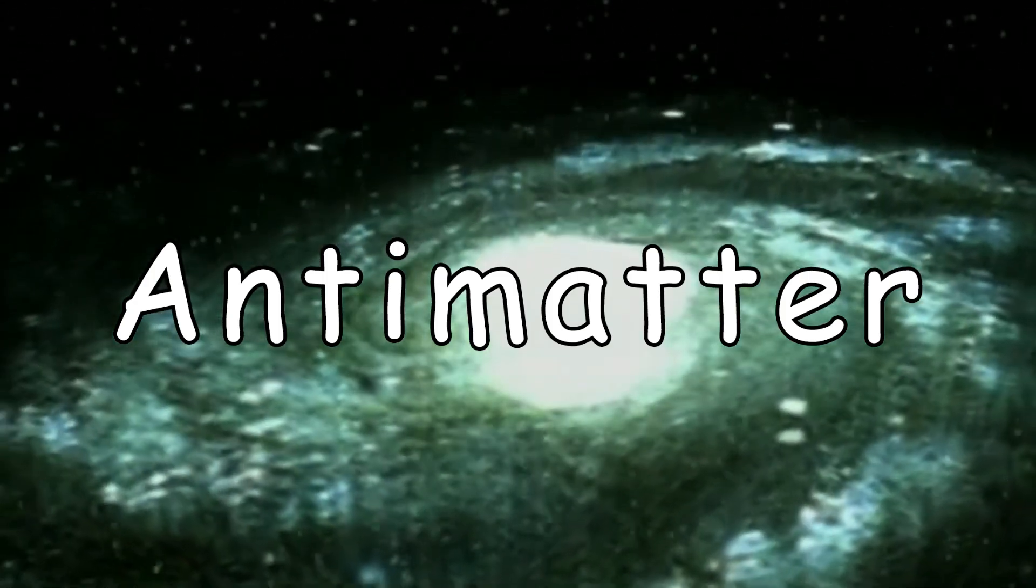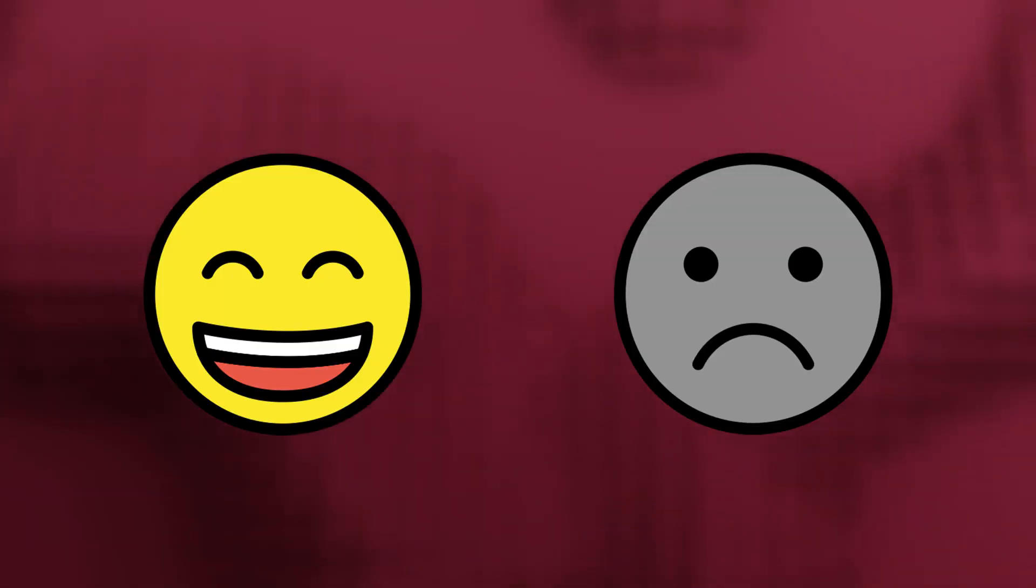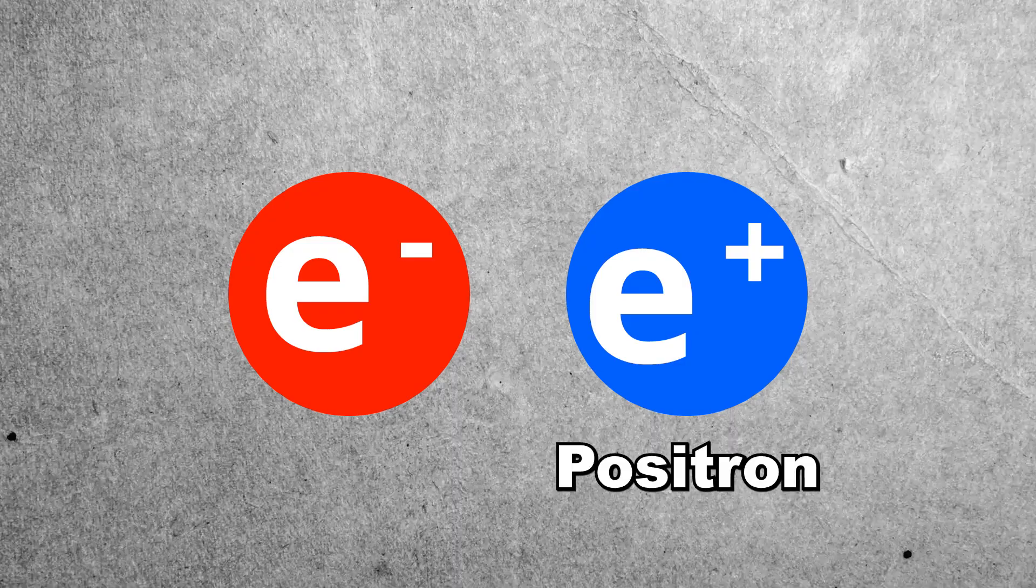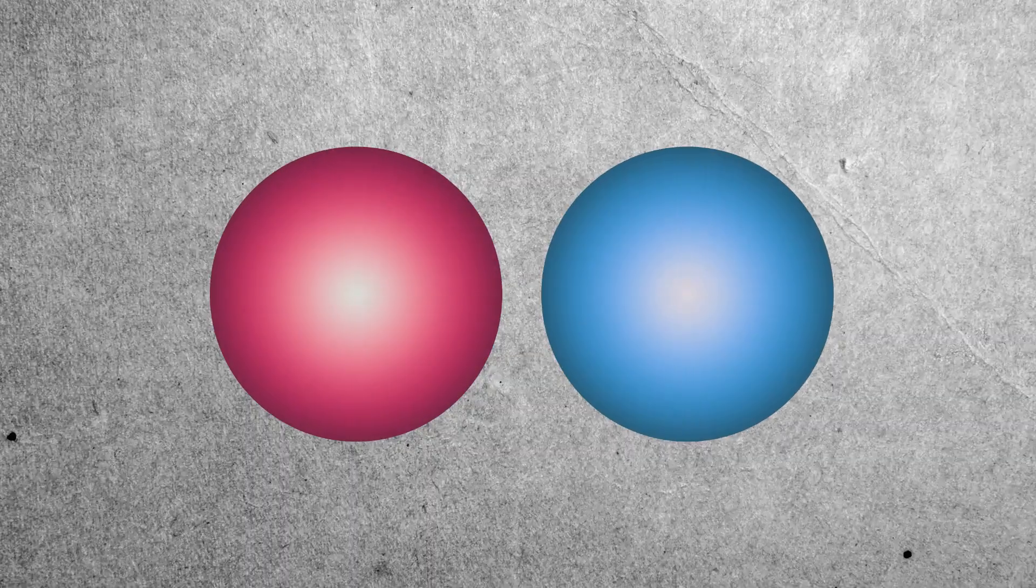Antimatter is exactly what its name says. It has the opposite properties of normal matter. Electrons have antimatter counterparts called positrons, and protons have antiprotons.